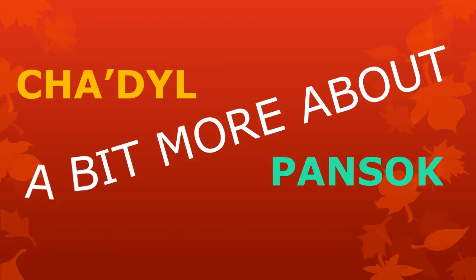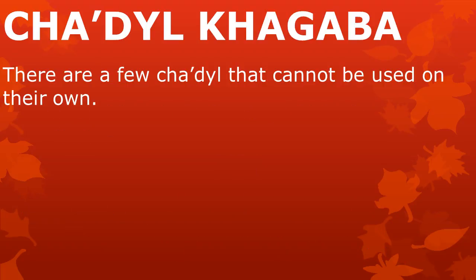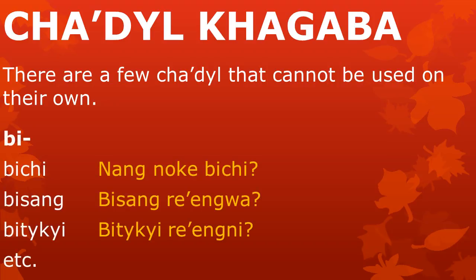Before we end this video, there is a bit more we need to know about tzadl and pansok. We have seen that tzadl can be used as words on their own in a sentence, but there are a few tzadl that cannot be used on their own. These tzadl always need to be combined with some pansok. We call this type of tzadl 'tzadl kagba', or bound roots. One example is 'bi' — it cannot be used on its own. We have to combine it with a pansok like 'ti', 'sang', or 'tekei' to make 'biqi', 'bisang', or 'bitekei'.